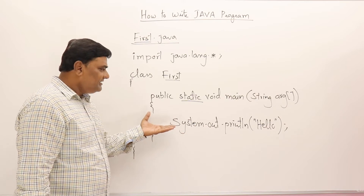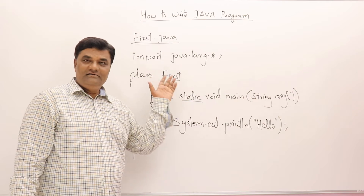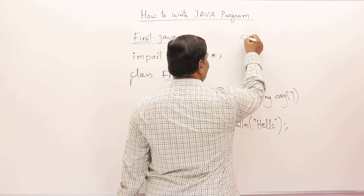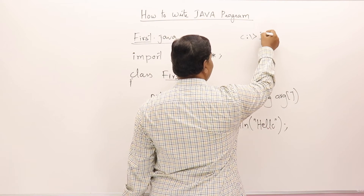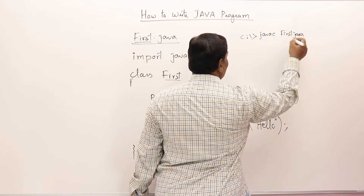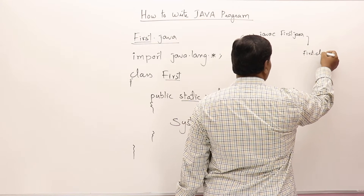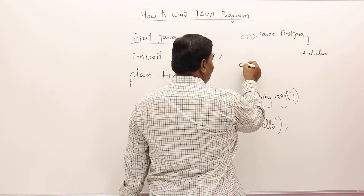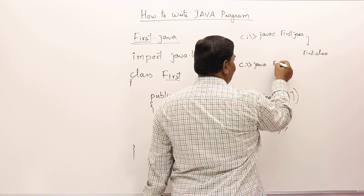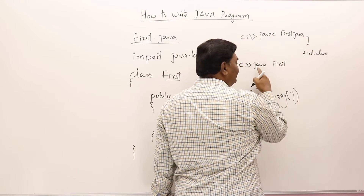This is a simple program - if you compile and execute it, it will print hello. Let us see how to compile and execute. At the command prompt, inside your folder, type javac first.java - this will produce a file called first.class, which is the bytecode. Then when you say java followed by the class name (no extension), the program runs. This is the method of compiling and execution.